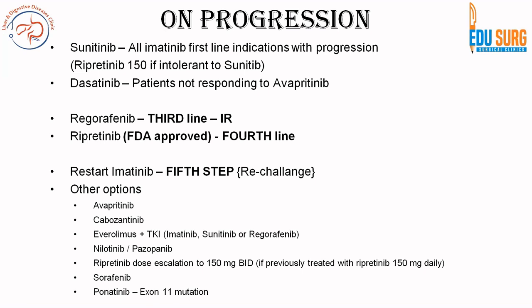On progression, sunitinib is the second-line therapy for all patients who received imatinib as first-line therapy. For avapritinib, the second-line therapy is dasatinib. Only for patients who do not tolerate sunitinib — with the major side effect being hypertension — ripretinib 150 mg once daily can be started as second-line therapy. Otherwise, ripretinib is approved as fourth-line therapy, after patients have received three tyrosine kinase inhibitors without response. So second-line therapy has two important drugs: sunitinib and dasatinib.